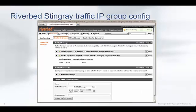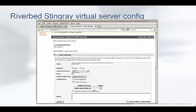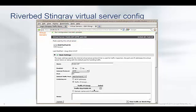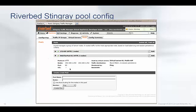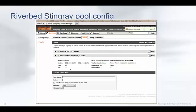Now let's look at the ADC configuration. A very simple ADC configuration involves setting up the VIP address on one of the ADC interfaces, creation of the virtual server which establishes a mapping between the VIP interface and the DIP pool, and finally the DIP pool itself, where private IP addresses of the web server instances are specified. Then an algorithm for balancing the load to the members of this pool is chosen. At the same time, a probe mechanism is chosen for the ADC to perform health monitoring of the members of the DIP pool.